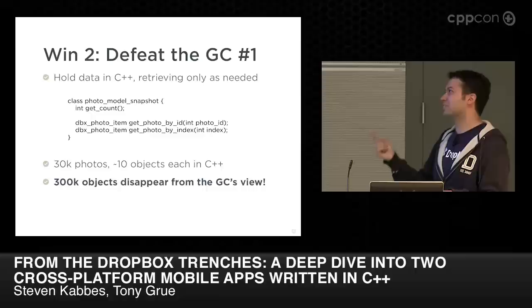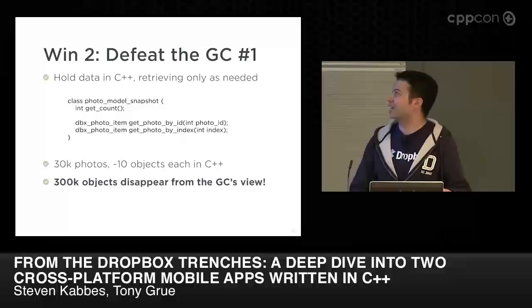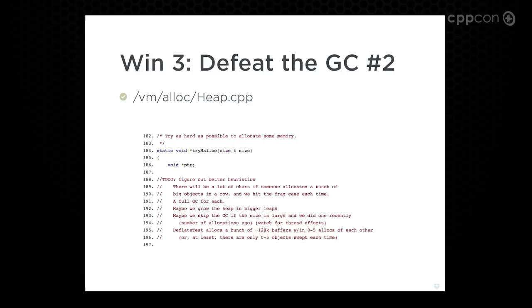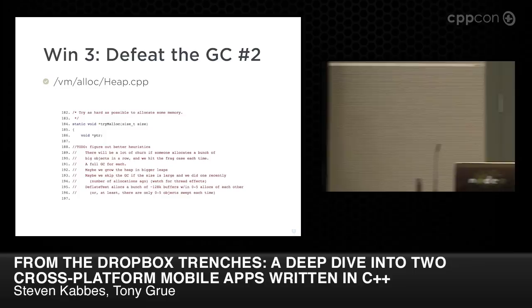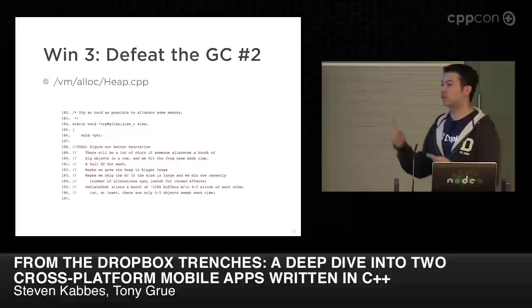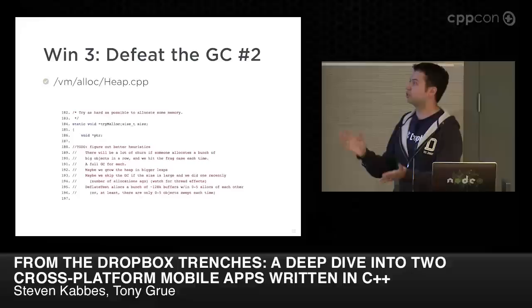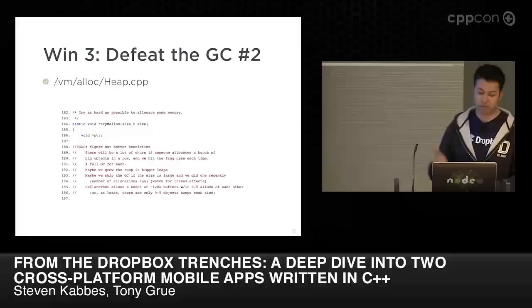So basically we just moved all our photo metadata into C++, which is the architecture I've already shown you. Instantly 300,000 objects disappear from the garbage collector's view. You might ask why we're caching 300,000 objects — because it makes performance better, but not if you do it in Java. So that was a really nice win. We just provide a simple interface: what's the size of this list, and get me information about this item. It's a little more complicated because you express where your viewport is as well.